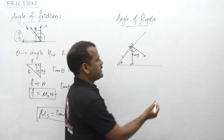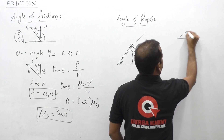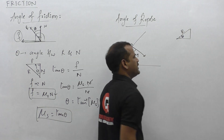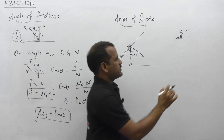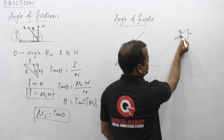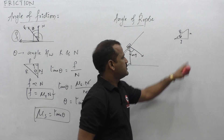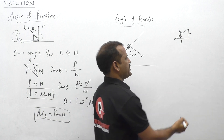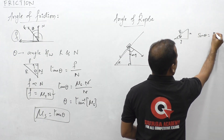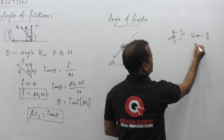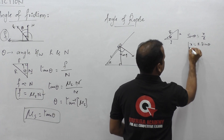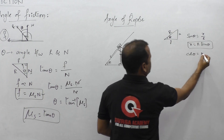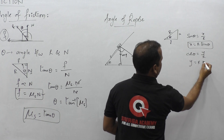To determine this, let us consider a right triangle. Here alpha is the angle and hypotenuse is r. The opposite side is x and adjacent side is y. So sin theta equals x by r, or x can be written as r sin theta. Similarly, cos theta gives y by r, or y is nothing but r cos theta.